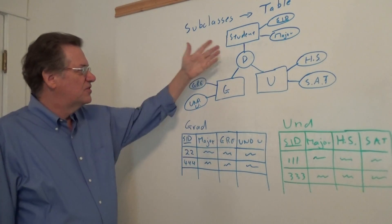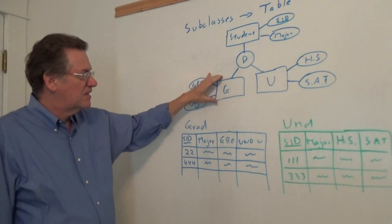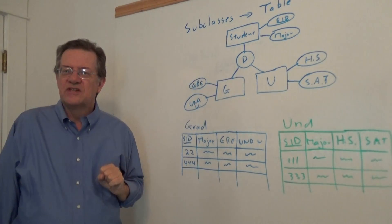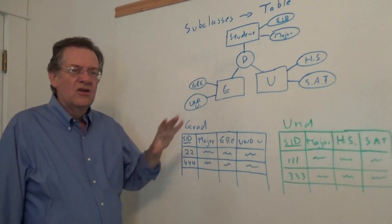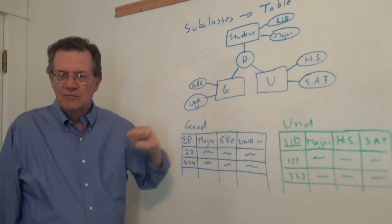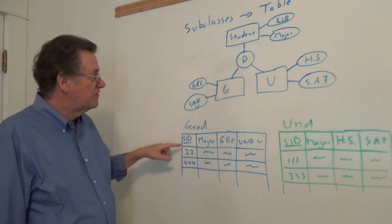We start off with the student which we say is subclassed into graduate and undergraduate. In the previous video we talked about creating one table. In this one we'd actually create one table for graduate and a second table for undergraduate.